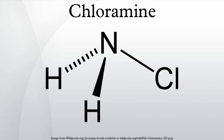In hydroponic applications, chloramines will stunt the growth and fruit production of plants. When a chemical or biological process that changes the chemistry of chloramines is used, it falls under reductive dechlorination.